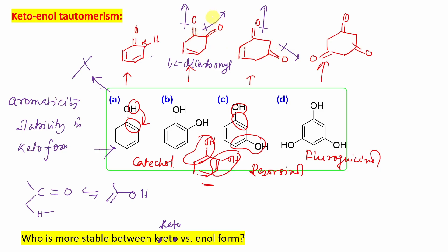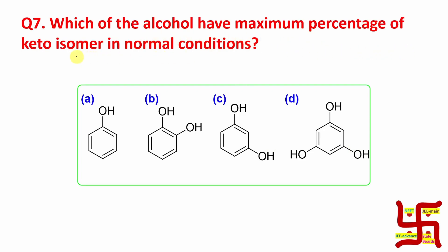But if you look at resorcinol, the carbonyl groups are far apart, so the 1,2-dipolar repulsion is absent. Resorcinol therefore has an equilibrium between its enol form and its keto form. Now, if you look at phloroglucinol, it is an interesting molecule — the majority of its percentage remains in the keto form, with the enol form being less predominant.